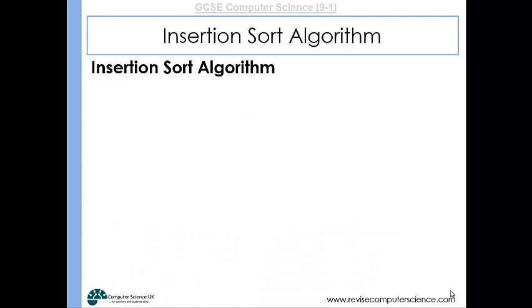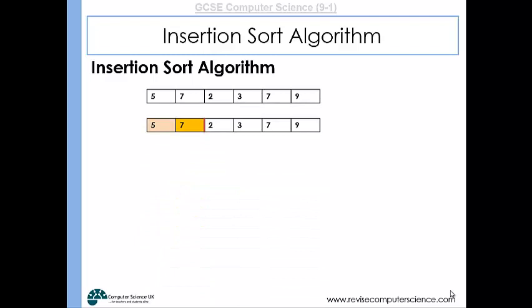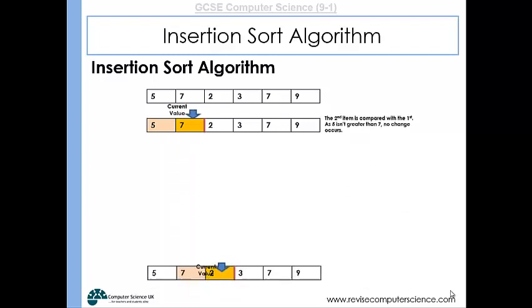Let's have a look at that in a visual way. Here is a set of data. If we were to look at the seven, it would be compared with the previous item, the five. Because the seven is greater than five, it stays where it is.